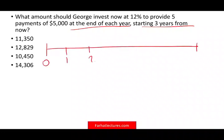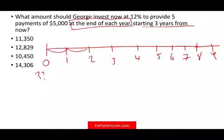This is what the problem looks like on a timeline: today is zero, then periods one through nine. George receives $5,000 at the end of each year starting three years from now. Three years from now is one, two, three — so the first payment George would receive is at the end of year three: $5,000, $5,000, $5,000, $5,000, $5,000 — five total payments. Be careful how the problem is given to you: beginning versus end of year three makes a difference.